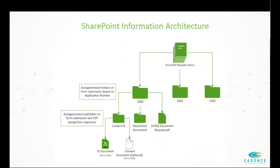This is the information architecture we've set up. Basically, in our SharePoint, we're going to have a document request library. Every time a form is submitted, we're going to have an auto-generated folder with a unique application number. Within those auto-generated folders, we're going to have two subfolders and a PDF of those form answers. Subfolder one, 'Contact ID,' is where all form attachments will be saved. 'Requested Documents' is where internal staff will upload those requested documents from the form. And the PDF is all the form answers saved in PDF format.